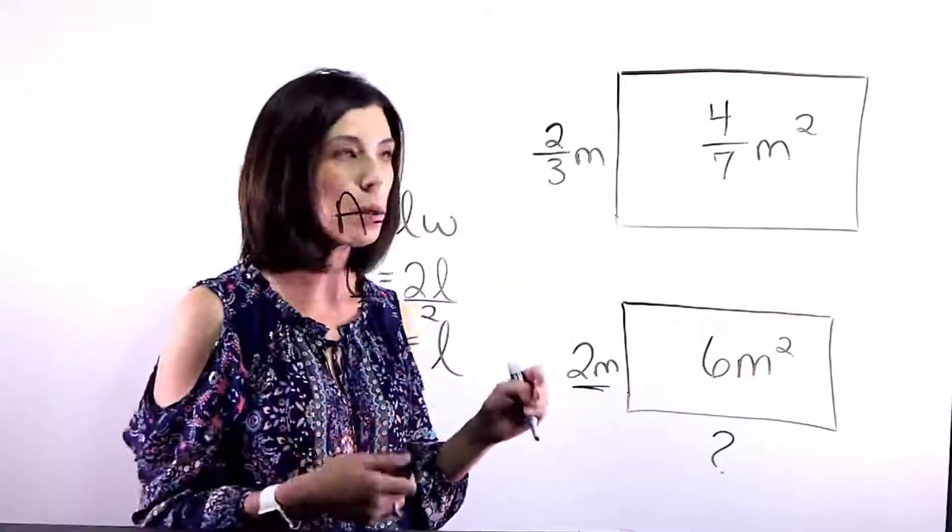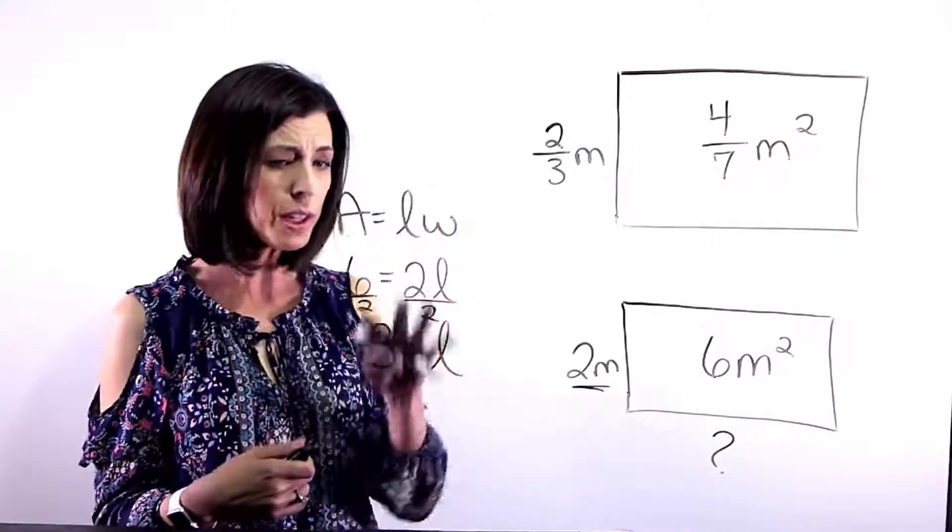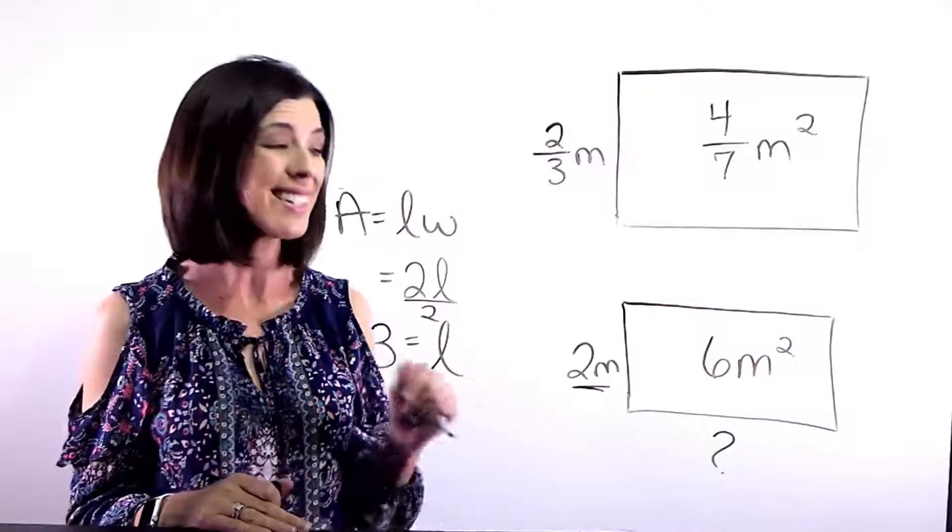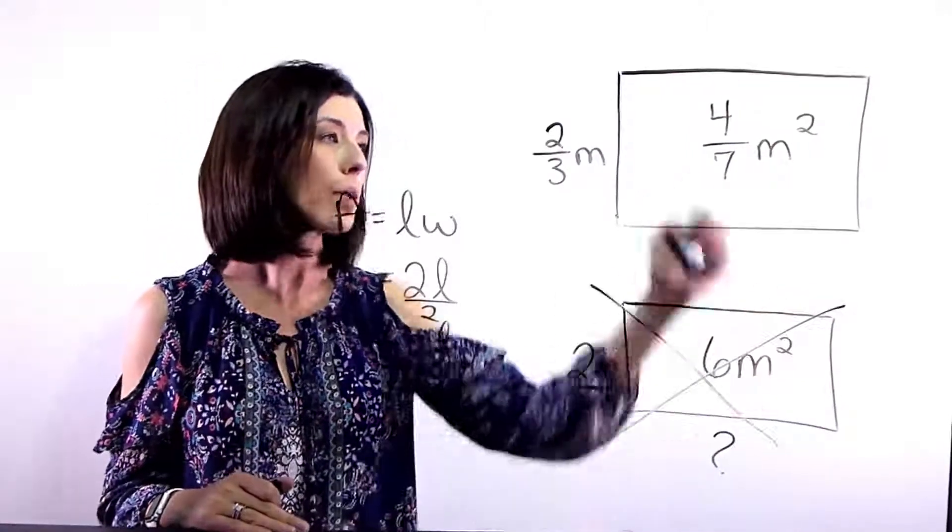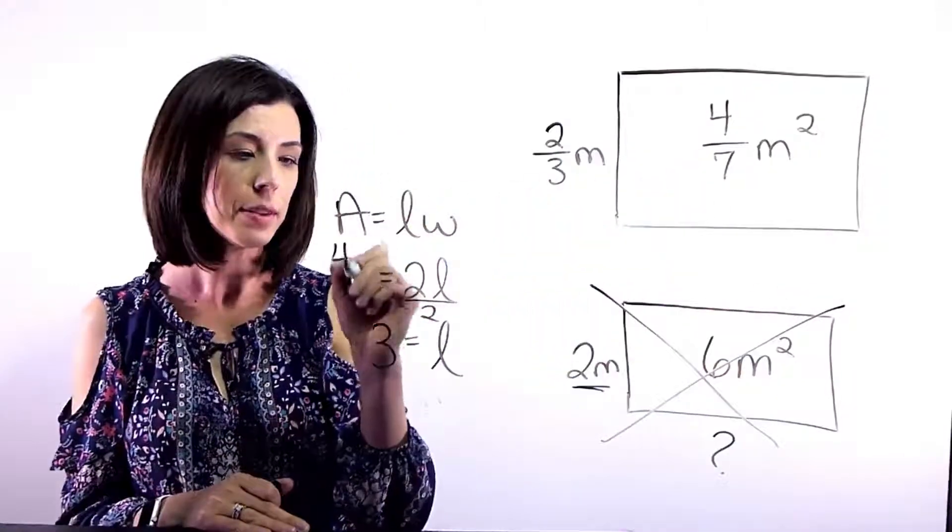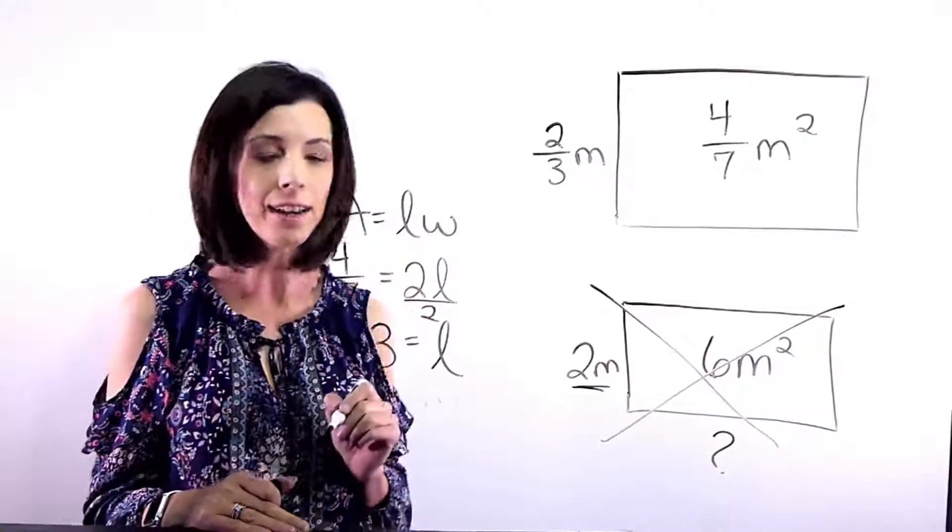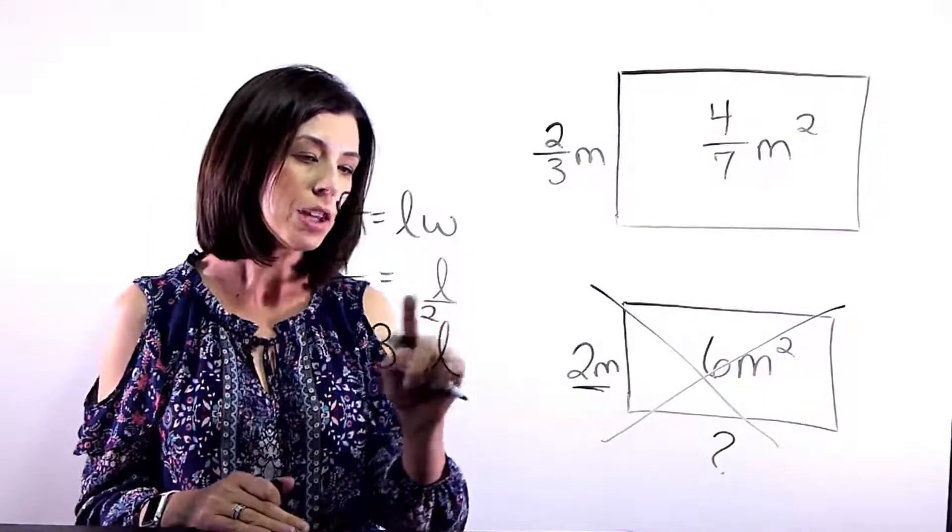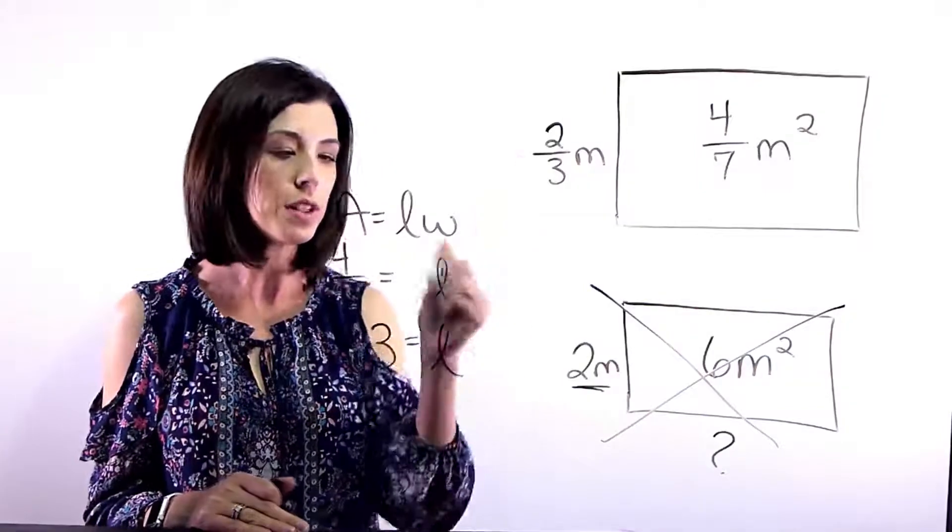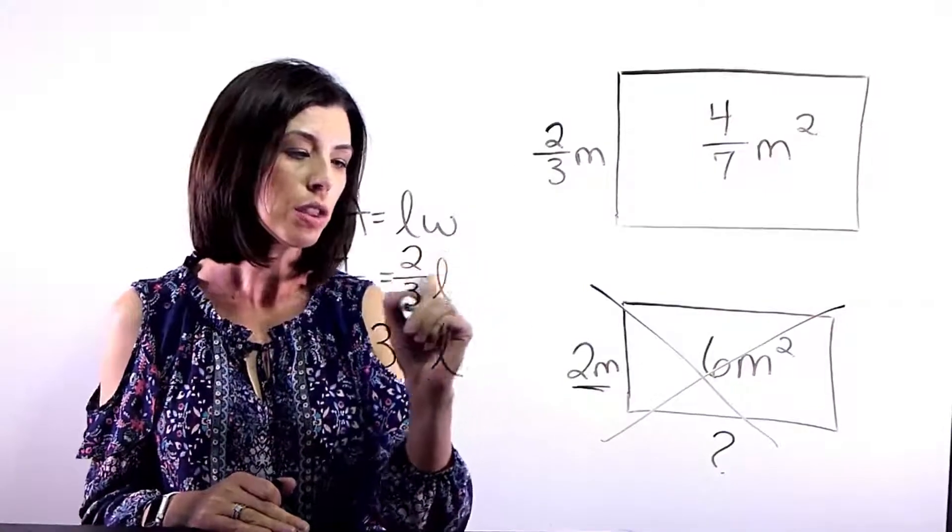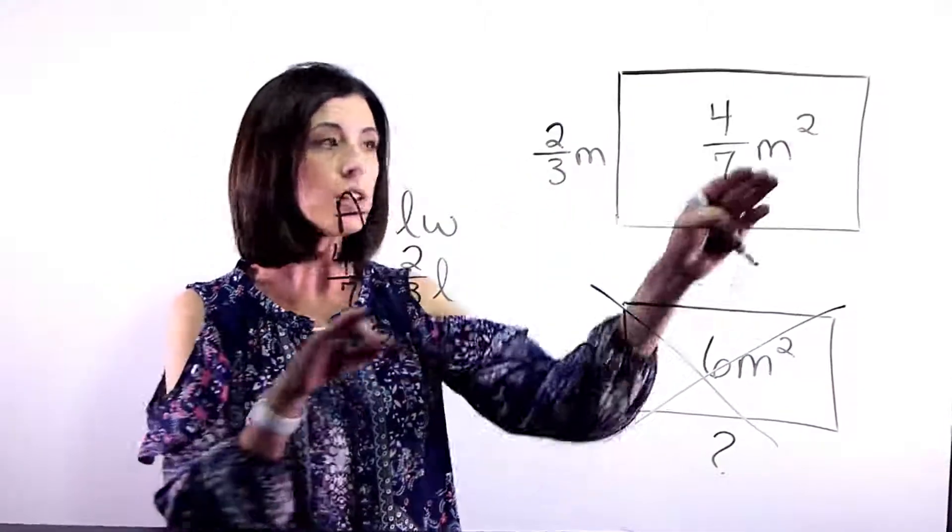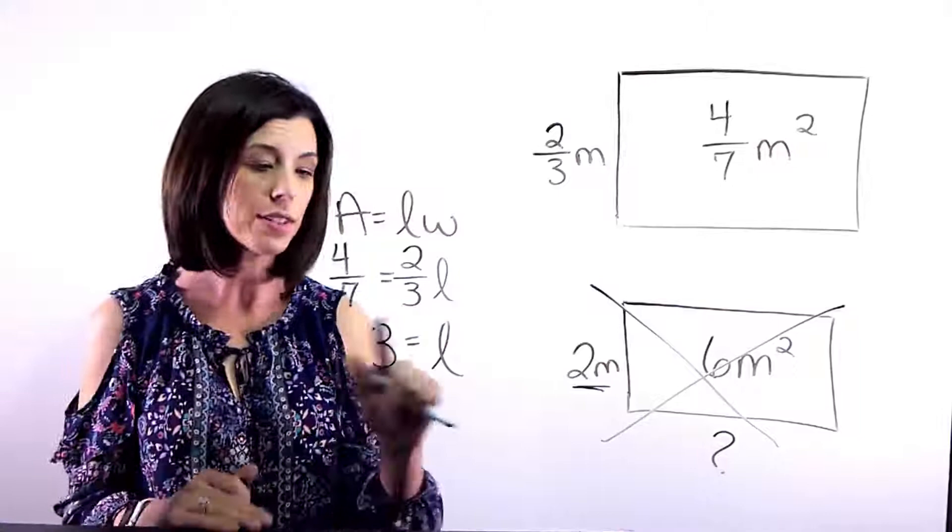Okay, now let's go back to our trickier question with the fractions. We're going to do the exact same thing. But this time, instead of saying that our area is six meters squared, it is four sevenths meters squared. So I'm going to go ahead and put that in. And then I know that I have, instead of my width being two in this case, I know that it's going to be two thirds times the length. So I know that the width times the length is going to give me an area four sevenths.